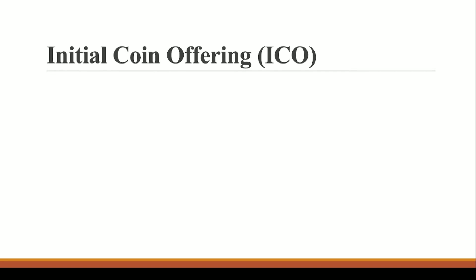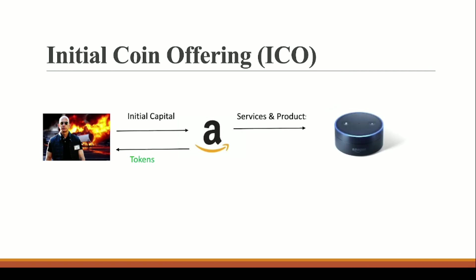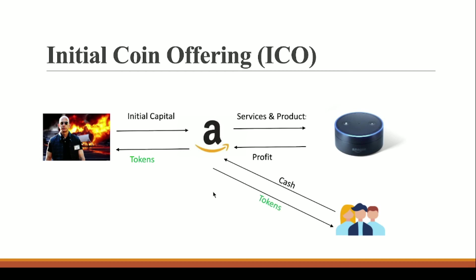In an ICO, instead of shares, investors receive tokens. The tokens represent the business — in this case, Amazon. People provide cash to the business and receive tokens in return. Whenever Amazon makes a profit, the token holders also make a profit; when Amazon makes a loss, the token value decreases accordingly.